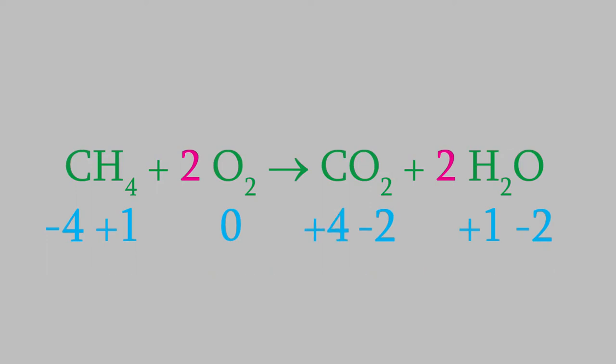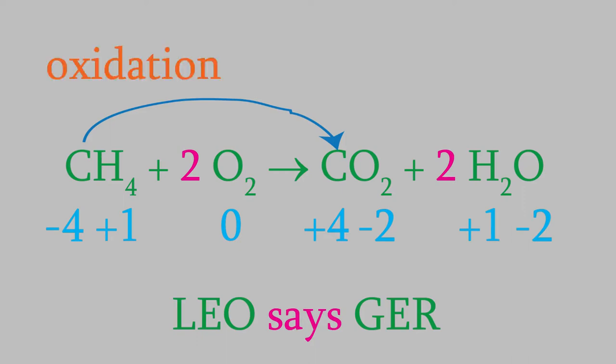You can see that some of the elements had their charges change, so that makes this a redox reaction. Which element was reduced, and which was oxidized? Well, the carbon went from a charge of minus four to plus four. So that tells us that it lost electrons. If you remember, Leo says ger, you'll know that since it lost electrons, the carbon was oxidized. Meanwhile, the oxygen went from a charge of zero to minus two. So it gained electrons, and that means the oxygen was reduced.